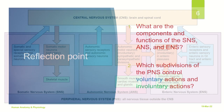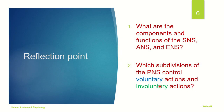With this, let's come to a reflection point. I would like you all to pause the video and answer the following questions: What are the components and functions of the somatic nervous system, the autonomic nervous system and the enteric nervous system? Second, which subdivisions of the peripheral nervous system control voluntary actions and which ones control the involuntary actions? After you have successfully attempted these questions, you can move to the next slide.